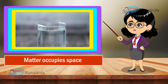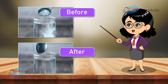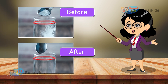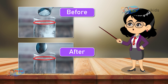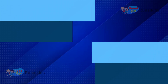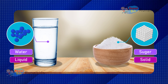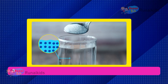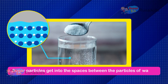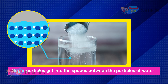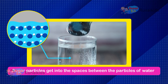Since matter occupies space, the sugar must occupy some space in the glass, but the water level remains the same. Both sugar and water are made up of tiny particles, and we know the particles of matter have space between them. When we add sugar into water, the sugar particles get into the spaces between the particles of water.